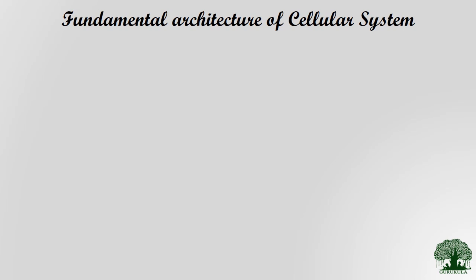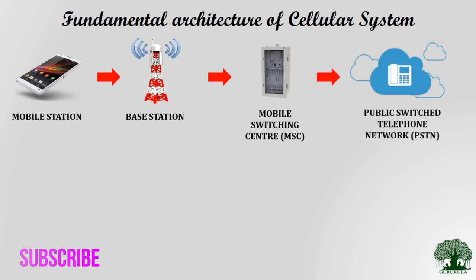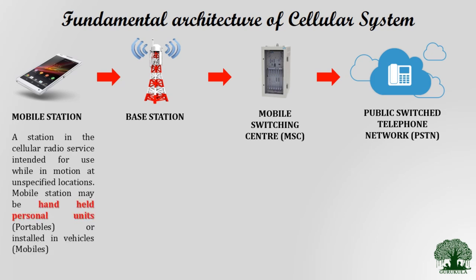The fundamental architecture of a cellular system comprises four components: the first is mobile station, the second is base station, the third is mobile switching center, and the fourth is public switched telephone network. Mobile station is our handheld device — what we have in our hand — and it moves from one point to another.